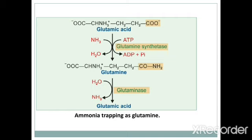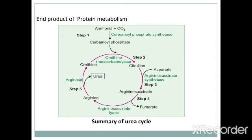In almost all tissues, transamination produces glutamic acid, but glutamate dehydrogenase is available only in liver mitochondria, so the final deamination and production of ammonia takes place in the liver. Glutamine is the transport form of ammonia from the brain and intestine to the liver, and alanine is the transport form from muscle to the liver.